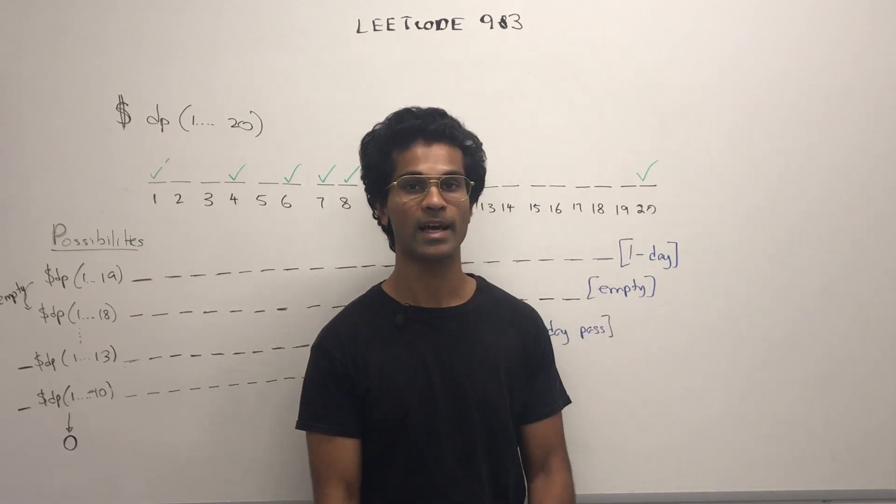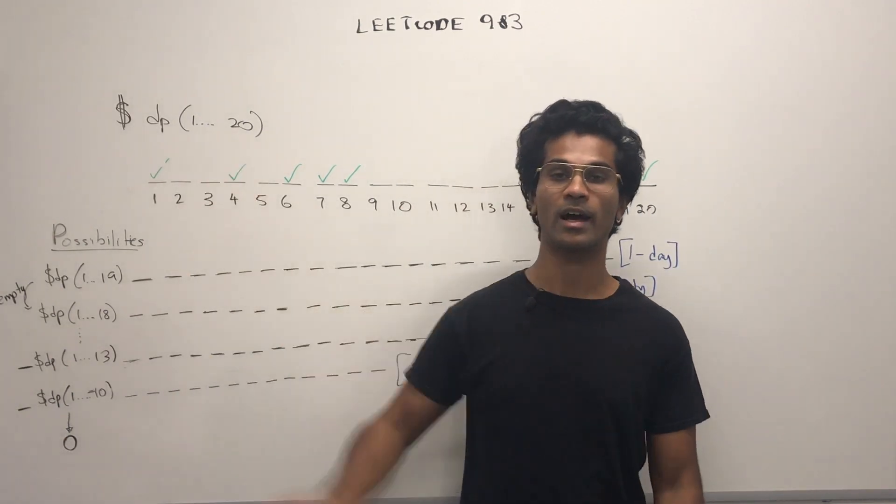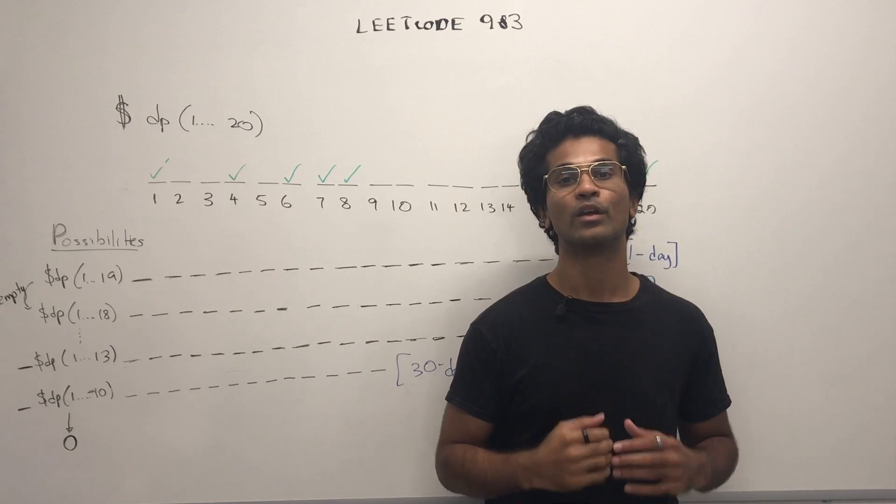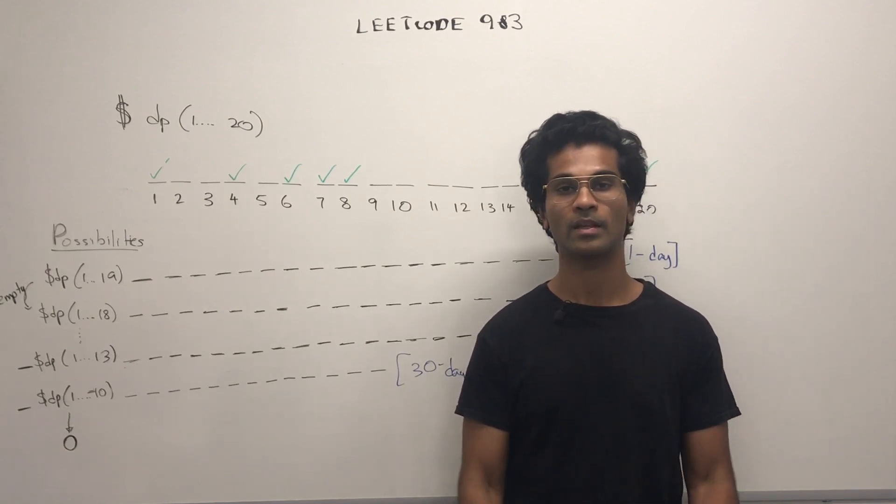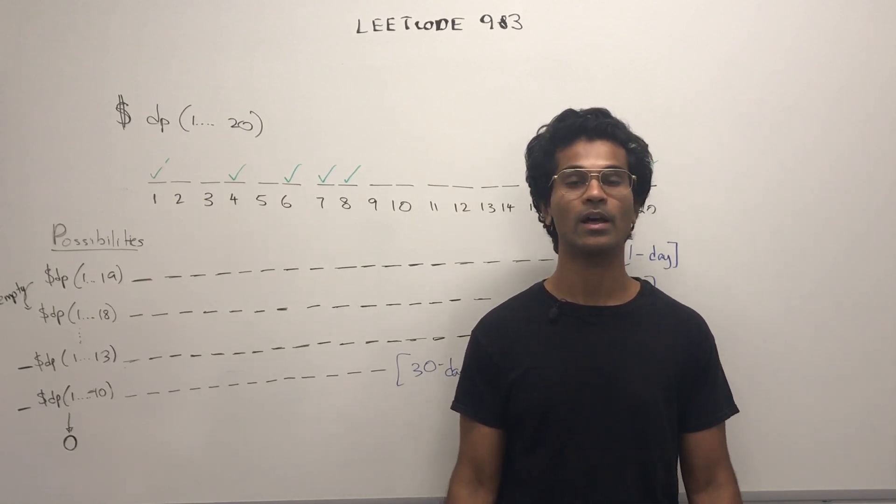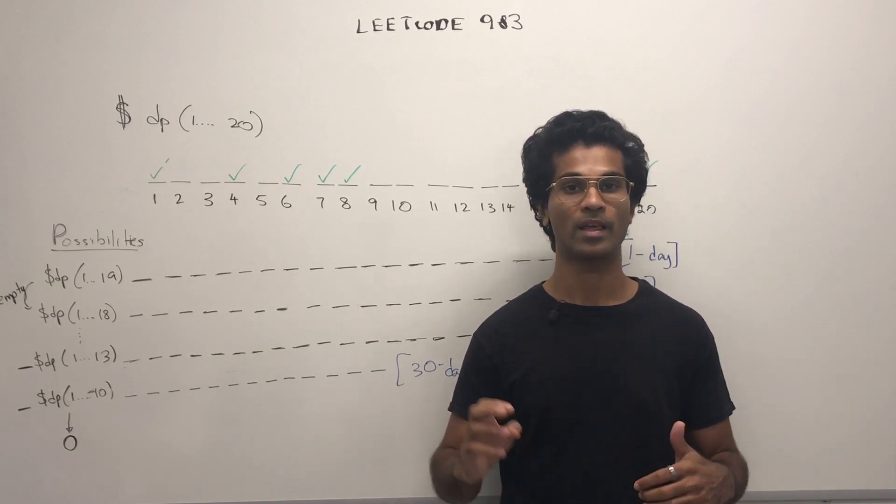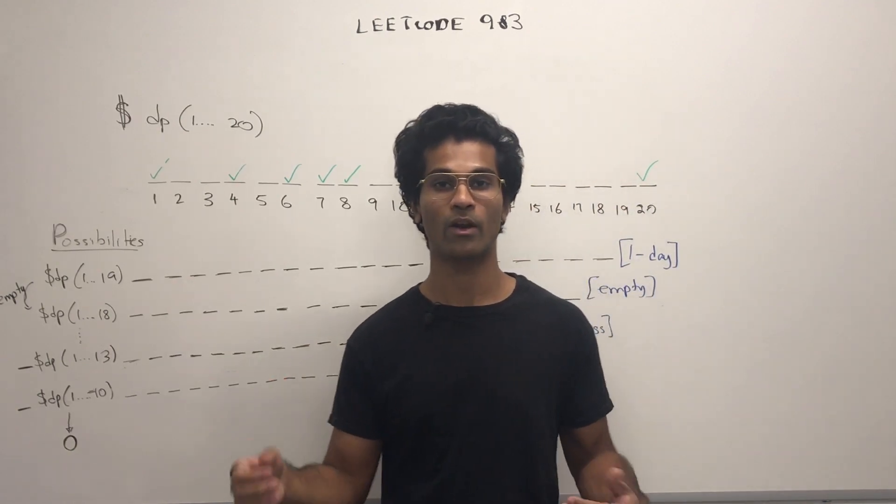First, we have to trust that I can solve this, I can find the minimum cost, using smaller versions of the same problem. So, then we have to figure out, how can we make this smaller, in a way that makes sense, and that we are allowed to do so.